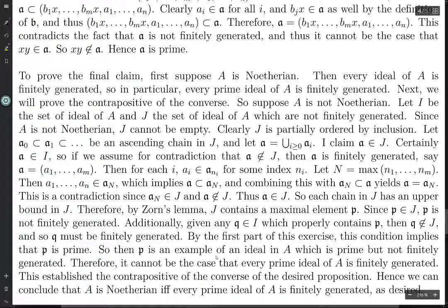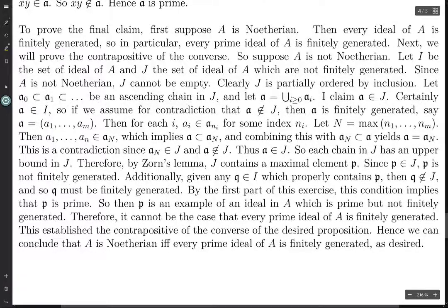Now for the other claim: we want to prove that A is Noetherian if and only if every prime ideal is finitely generated. One direction is easy — if A is Noetherian then every ideal of A is finitely generated, so in particular every prime ideal is finitely generated. For the other direction we prove the contrapositive: if A is not Noetherian, then it is not the case that every prime ideal is finitely generated.